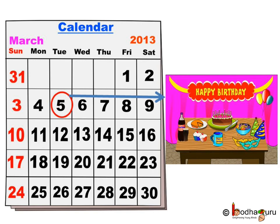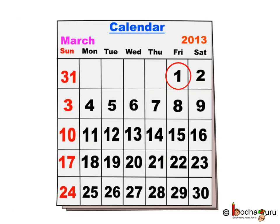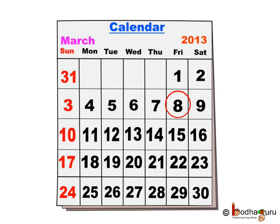See, there are 31 days in the month of March. Same way, other months too consist of many days, varying from 28 to 31 days, which we will see later.